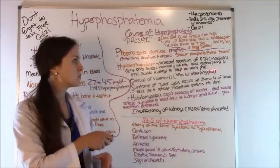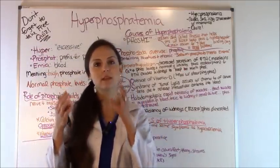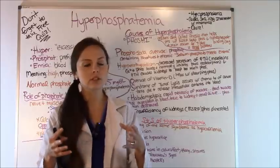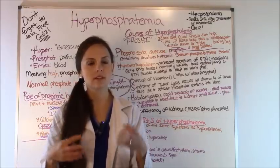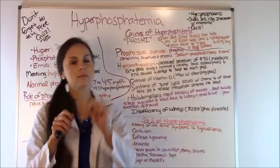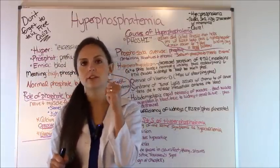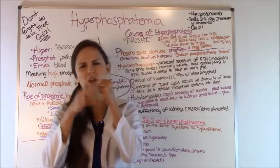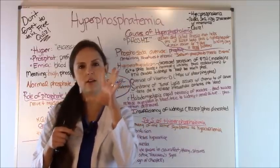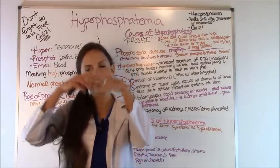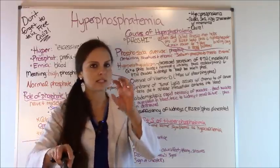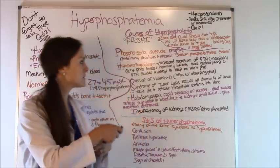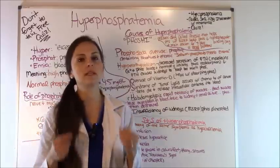Tumor lysis syndrome happens whenever a patient is receiving chemotherapy for cancer. The goal of chemo is to kill those cells, but unfortunately chemo kills good cells as well. Inside the cell — intracellularly — you have phosphorus, sodium, potassium, and other electrolytes. When the cell is lysed and killed, it opens up and all this phosphorus and these electrolytes enter into the bloodstream, raising phosphate levels. Those intracellular contents are being dumped into the blood.